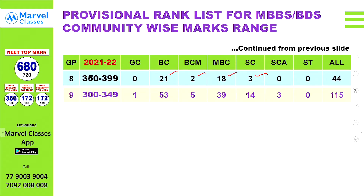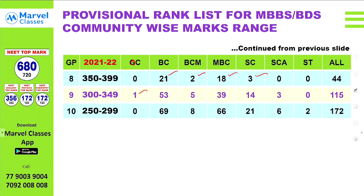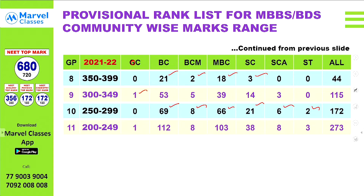In the 300 to 349 range, there is 1 OC student in the list, along with BCM students, SE 38, SEA 3, and ST 3, bringing the total to 273 students in this segment.